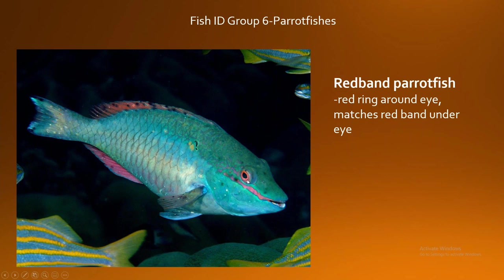The red band parrotfish is defined by a red ring around its eye and a red band or stripe that connects the edge of its mouth and runs up to its eye. REEF's memory clue for this is 'putting the Ray-Bans on the red band.' When I was first learning the species, that actually helped quite a bit — looking for that red band and looking for the red eye ring. Ray-Bans on the red band.